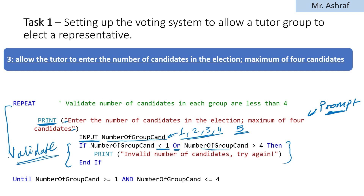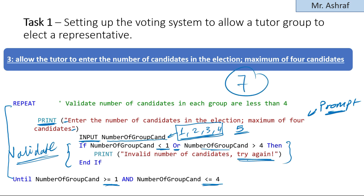I also made a REPEAT UNTIL loop here. This will keep repeating until the number of candidates is greater than or equal to one AND less than or equal to four. So in case the user inputs any value other than one, two, three, or four, this loop will repeat until a valid value is entered. For example, if you input seven, that is an error and it will ask you to try again until you input a valid value of one, two, three, or four. That covers point number three.